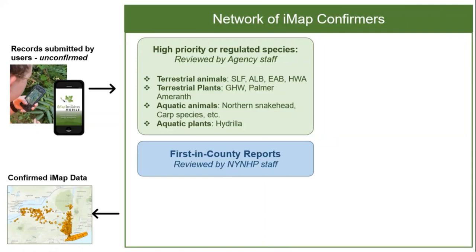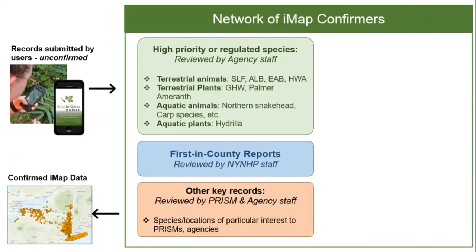We also coordinate with partners to get records reviewed and followed up on. First-in-county reports — the first time a certain species was recorded in a certain county — are really significant; they might mean the species was underreported or represent an opportunity for early detection and rapid response. Then there's another category of other key records, where PRISM partners and other agency staff review species reported in locations of particular interest to PRISMs, agencies, and other partners.